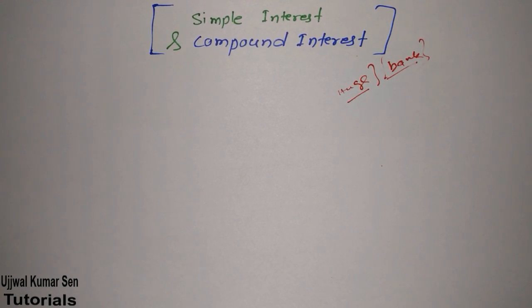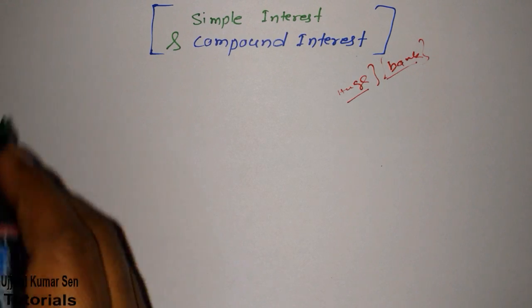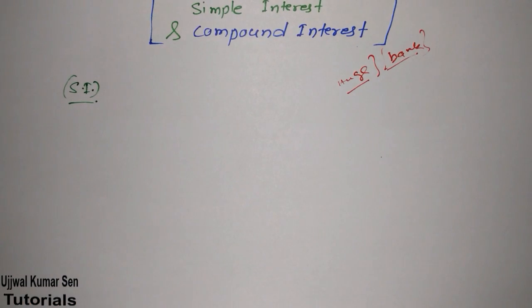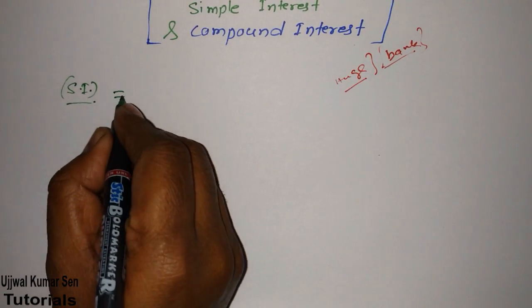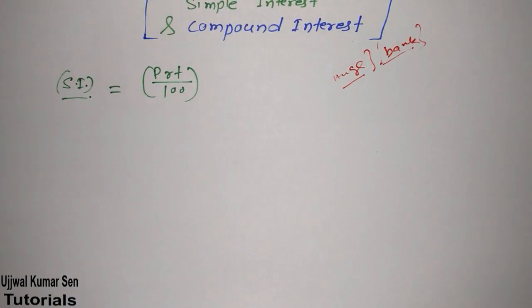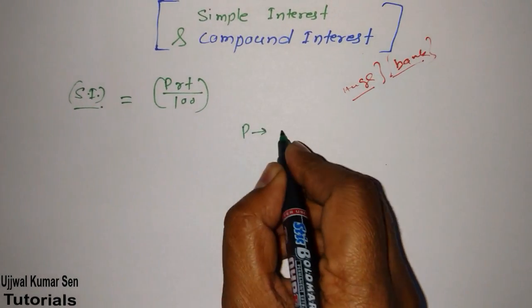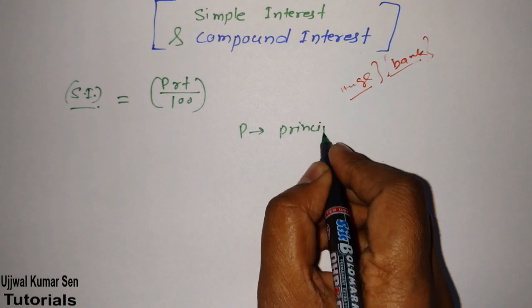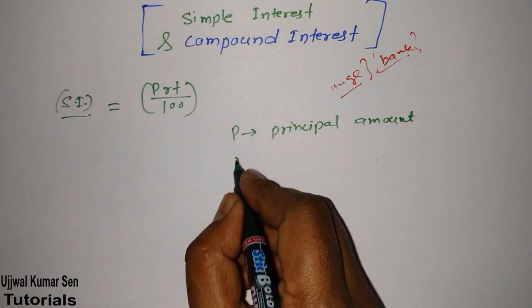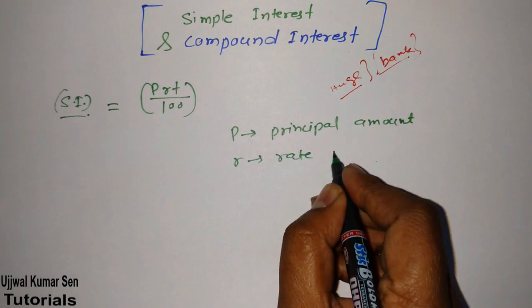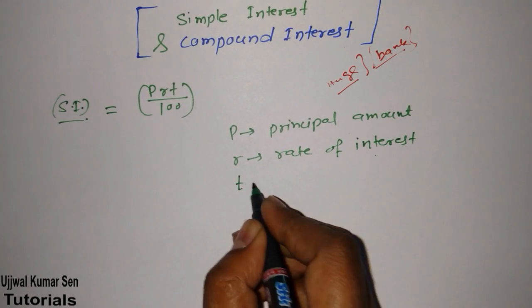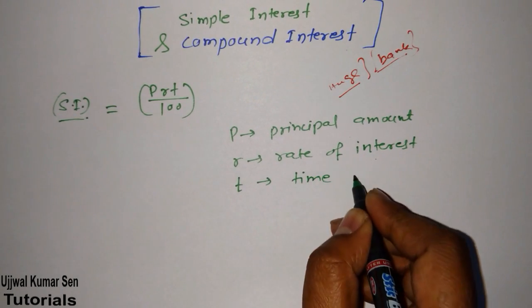First of all, let's get started with simple interest — in short it is known as SI. The formula for simple interest is: SI = (P × R × T) / 100, where P is the principal amount, R is the rate of interest, and T is the time period.